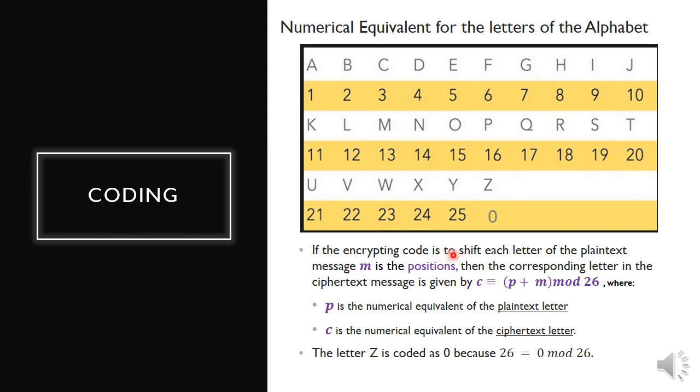These are the numerical equivalent of the letters of the alphabet. A is 1, B is 2, C is 3, and so on. The last letter Z is supposed to be 26, but since we're using modulo 26, it automatically becomes zero. If the encrypting code is to shift each letter of the plain text message M positions, then the corresponding letter in the ciphertext is given by this formula: C congruent to P plus M modulo 26, where P is the plain text, C is the ciphertext, and M is the position. The letter Z is coded as zero because 26 equals zero mod 26.